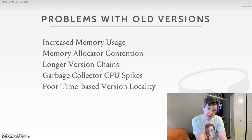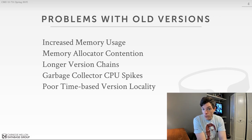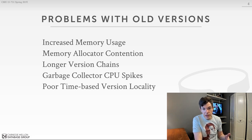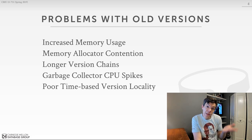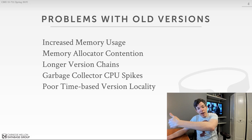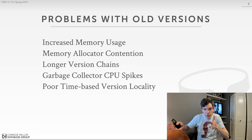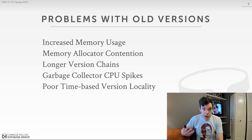Inside the database system, if you have these old versions, depending on the version storage scheme and the order your version chain is maintained, you could have really long version chains to traverse in order to find the correct version your transaction needs. If you're doing newest-to-oldest, it's not that big of a deal since most transactions need the latest tuple at the head. But for oldest-to-newest, like HyPer, you have to traverse the entire long chain every single time.